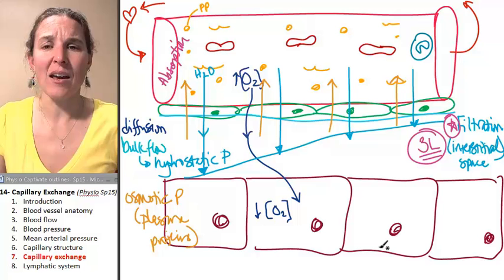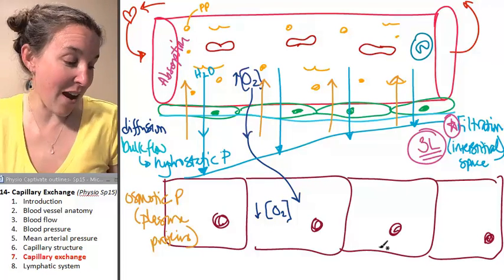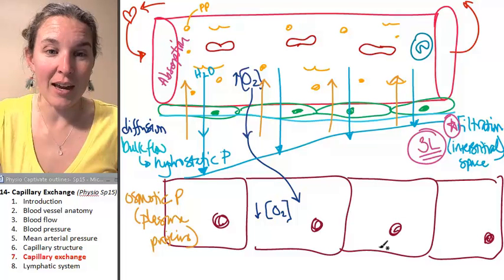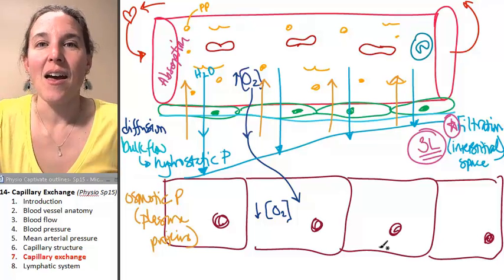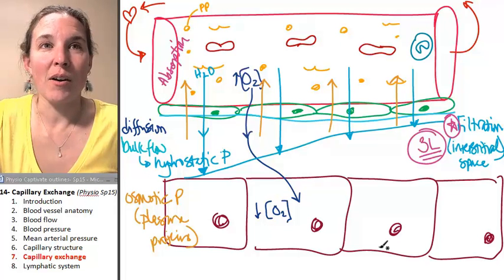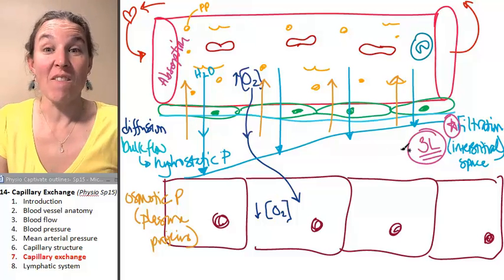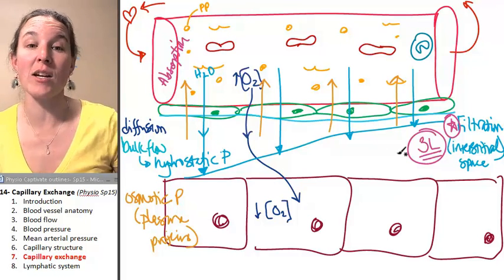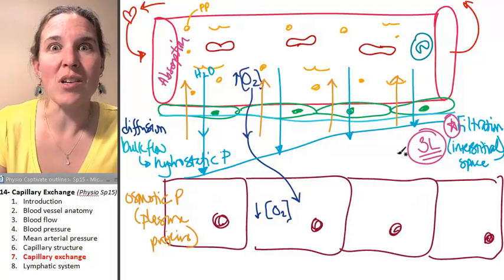Both of these things balance to result in a net filtration of three liters every day. What happens to that? Because I'm telling you right now, if you had three liters of fluid every day added to your interstitial spaces, you would be like the blueberry girl in Willy Wonka's Chocolate Factory movie. Violet Beauregard would be you because you would be swelling every day. So where does it go? We dump it into the lymphatic system, and we'll talk about that next.